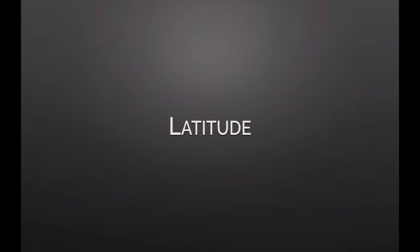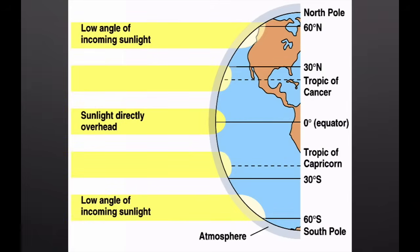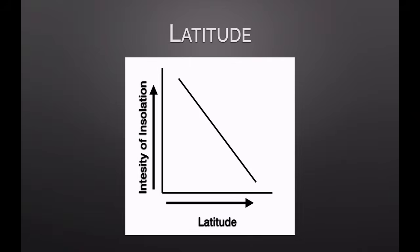The next factor that influences insolation is latitude. Latitudes closer to the north and south poles receive less insolation than latitudes nearer to the tropics and the equator. When we go on vacation we go south, and that's because as we go south there's more sunlight and it's warmer — the latitude puts those locations in position to receive more direct rays all year round. As latitude increases toward 90 degrees north or south, the intensity of insolation decreases. So they are indirectly related.